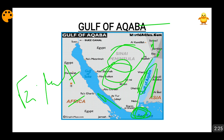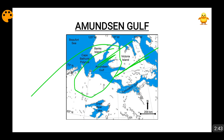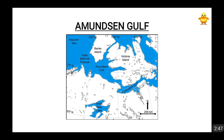Moving forward, we will talk about the Amundsen Gulf. This is a 400-kilometer-long gulf located between the Canadian northwest territories, including Wollaston Island and Banks Island. In between these Canadian territories, the Amundsen Gulf is situated. There is also a Coronation Gulf nearby. These are all between the Canadian territories.